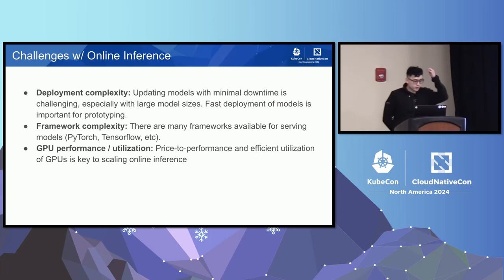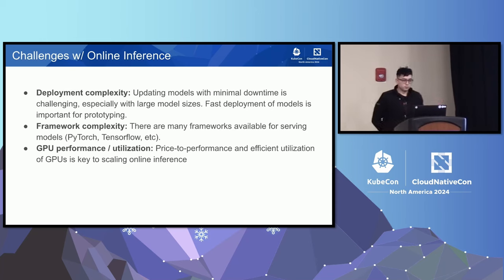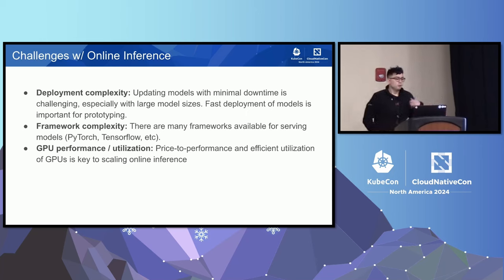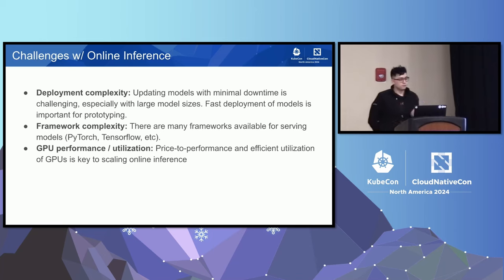Online inference today has several common challenges. The first is deployment complexity — models are becoming larger, running on more expensive GPUs, and taking longer to start up, especially when pulling model weights from a remote bucket. You also often have to orchestrate multiple models together. Fast prototyping and iteration is critical for researchers. There's also framework complexity as different researchers prefer different underlying frameworks. And it's challenging to fully optimize performance, utilization, and cost, especially with expensive hardware accelerators like GPUs.